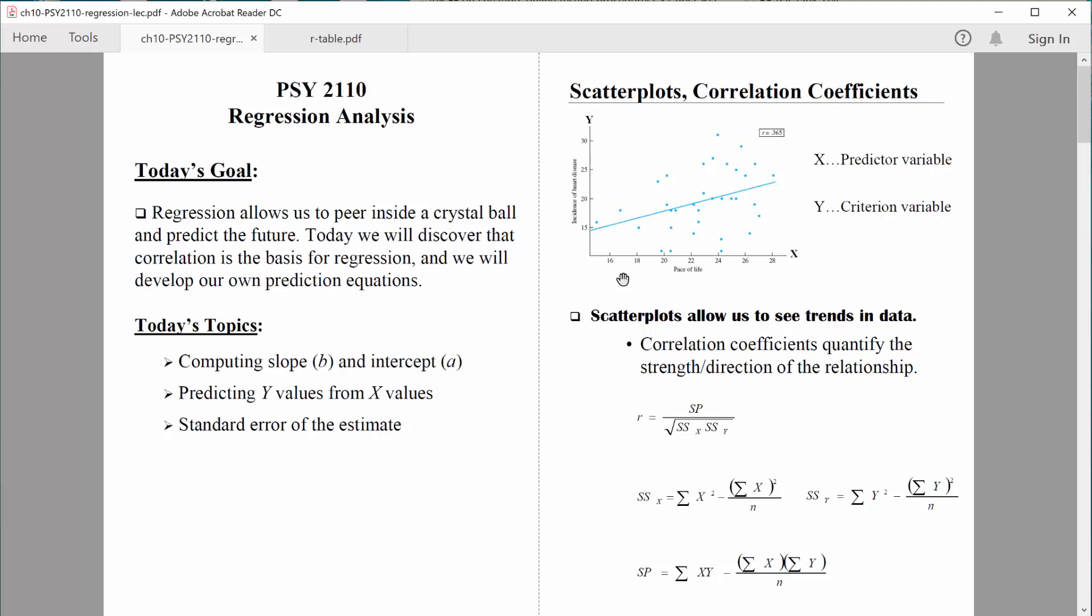And although it doesn't look like there's a really strong relationship to this data, you can see that in general, there is a trend moving upward such that people who have a more busy, more hectic pace of life are more likely to suffer from heart disease. So we can see that to some extent in the scatterplot.